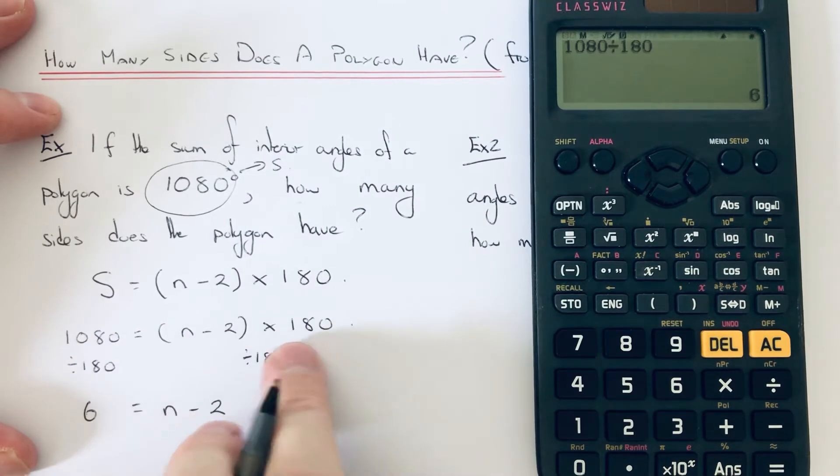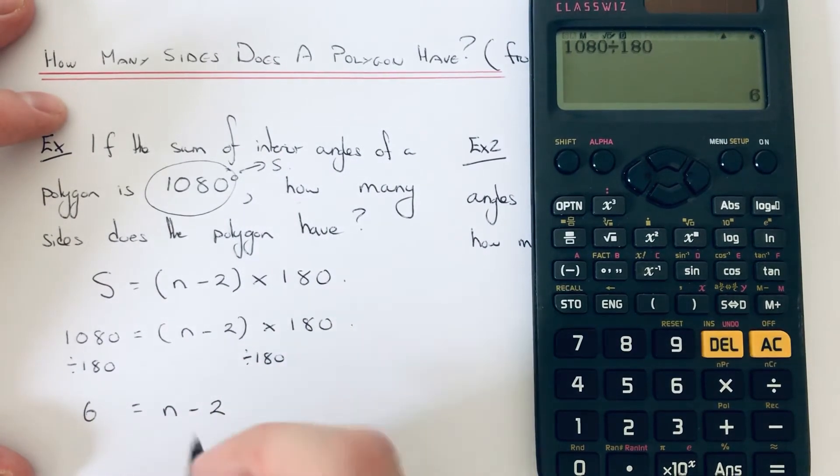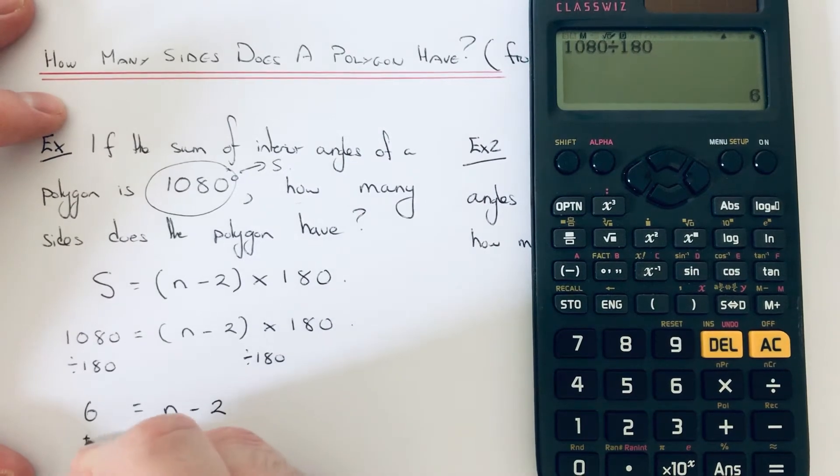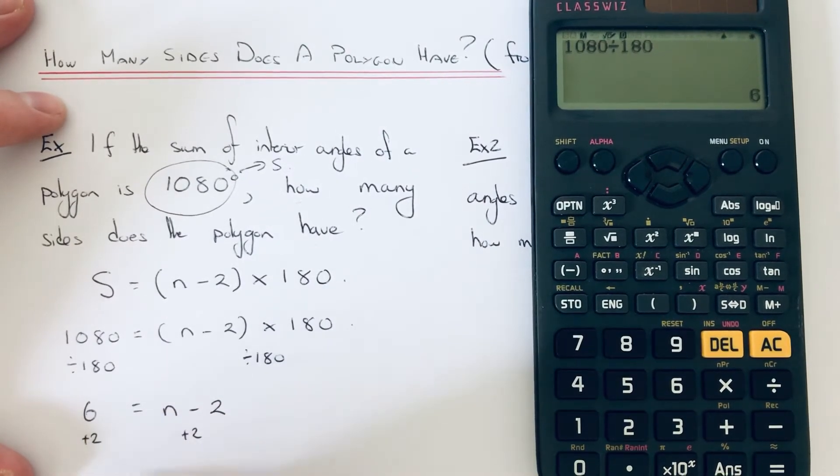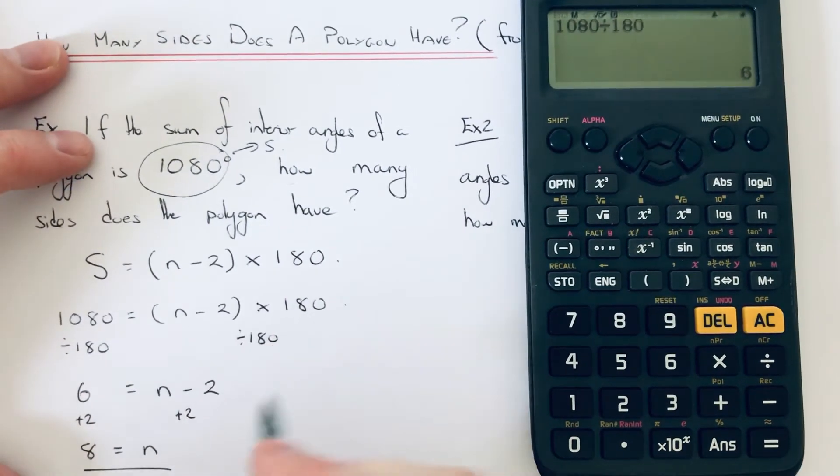We don't need to put the bracket there now because there's nothing being multiplied by it. The opposite to minus 2 is add 2, so 6 add 2 is 8, so n is equal to 8.